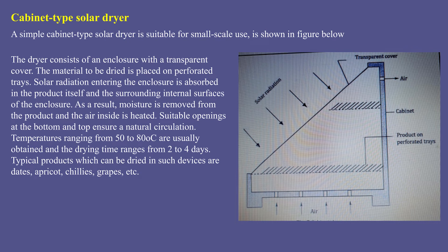Cabinet type solar dryers — simple cabinet type — are suitable for small scale use. The dryer consists of an enclosed enclosure with a transparent cover, and the material to be dried is placed on perforated trays. The solar radiation entering the enclosure is absorbed by the product itself and the surrounding internal surfaces. As a result, moisture is removed from the product and the air inside is heated. Openings at the bottom and top ensure natural circulation. Temperatures ranging from 50°C to 80°C are usually obtained and drying time ranges from 2 to 4 days. Typical products which can be dried include dates, apricots, chillies, and grapes.